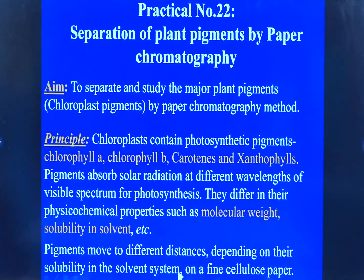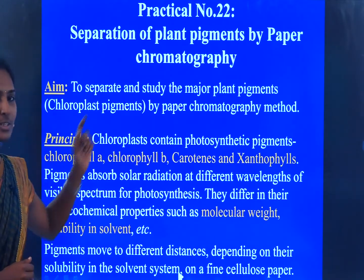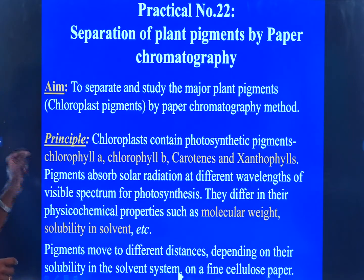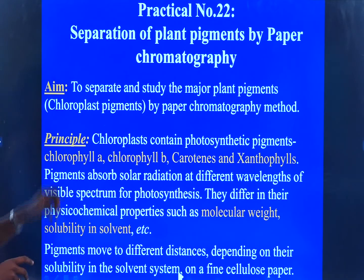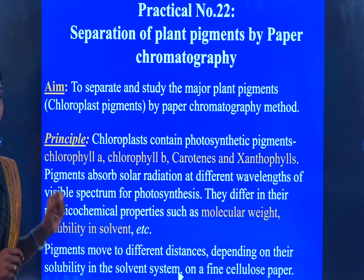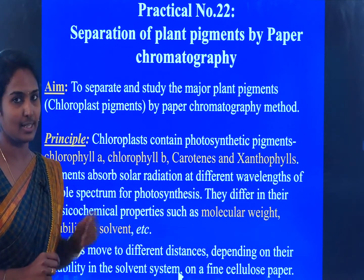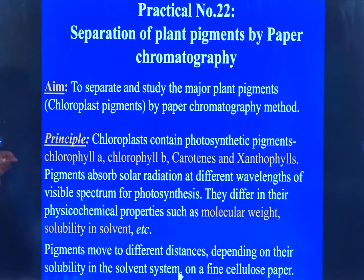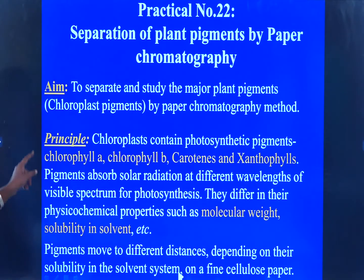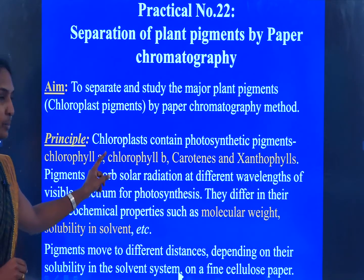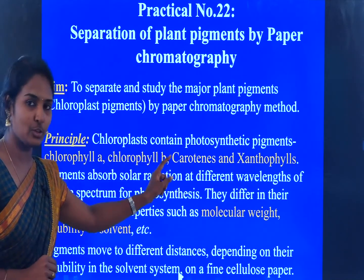The aim of the experiment is to separate and study the major plant pigments. The major plant pigments are found in the chloroplast. The principle is that chloroplasts contain photosynthetic pigments: chlorophyll A, chlorophyll B, carotene, and xanthophyll.